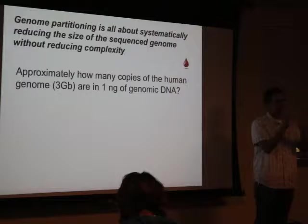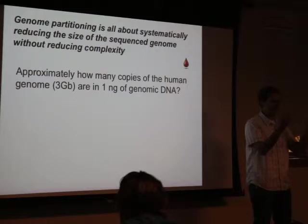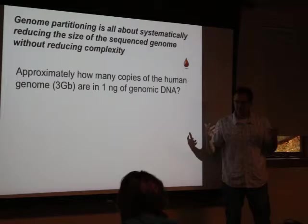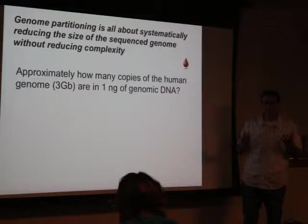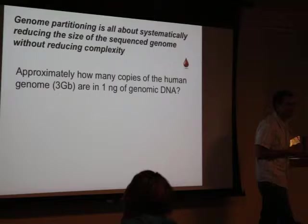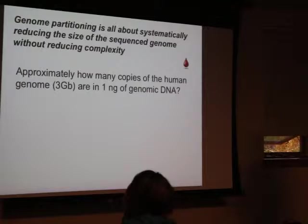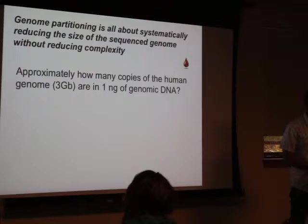Genome partitioning is all about systematically reducing the size of the sequenced genome without reducing complexity. All of these approaches take a huge genome complement and try to get subsets of it. The trick — the devil in the details — is making sure that when you do that, you maintain lots of copies of those subsets and get rid of everything else. If you lose that complexity, you experience a lot of problems in data analysis: allele dropout, biases, and skews.